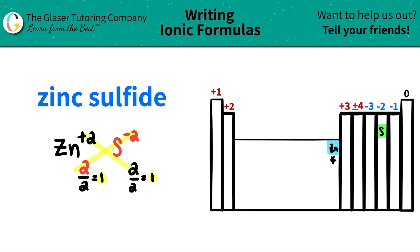So when I write my compound, I'm going to say that I have zinc, but now I only have one of them. So I don't have to write the one. Sulfur comes next. I only have one of them. So I also don't have to write the one. And now we are good. So zinc sulfide is just ZnS.